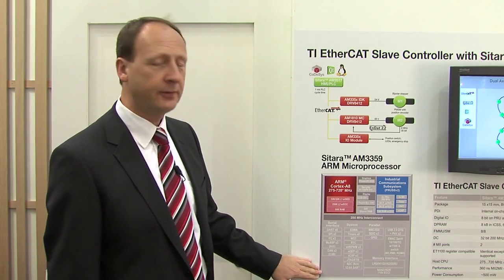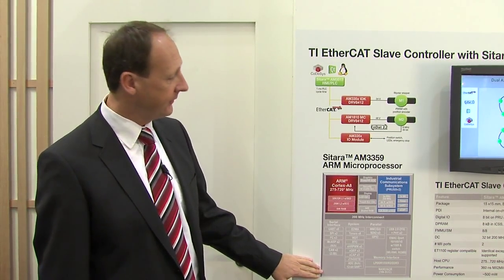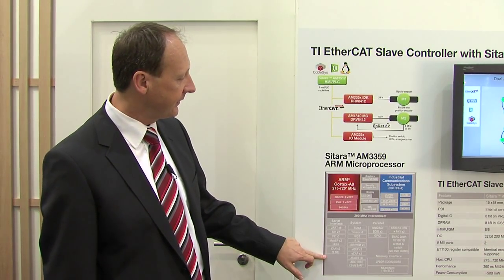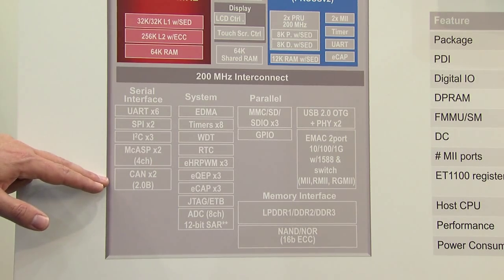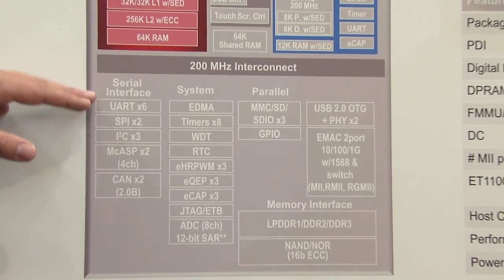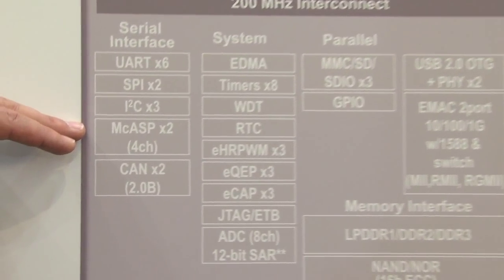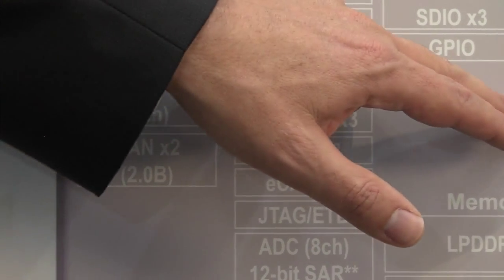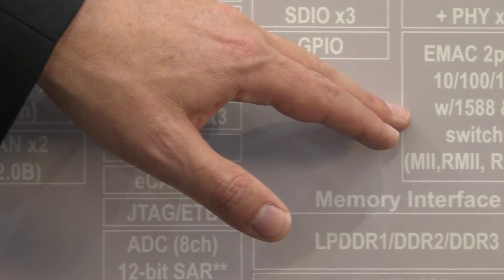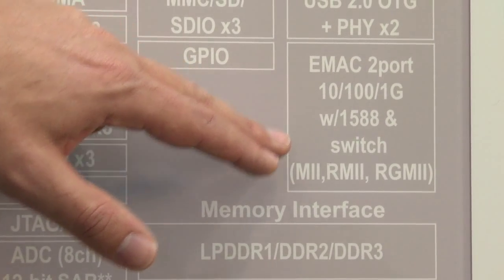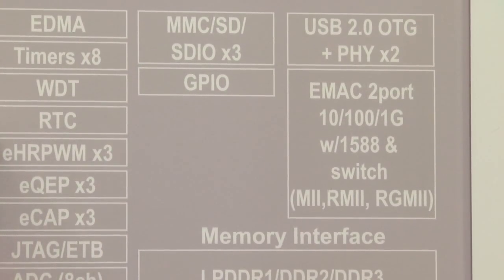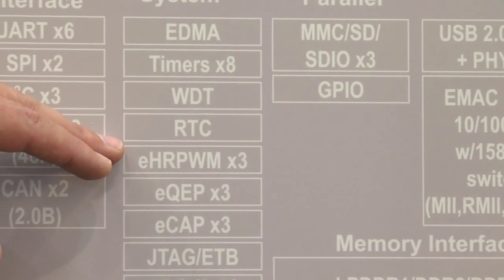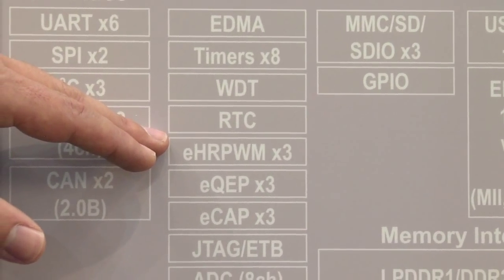There are more peripherals on the system like CAN interfaces, serial interfaces, and a gigabit switch with two ports. In addition, there are motor control peripherals to drive motors and inverters directly with the AM335X.